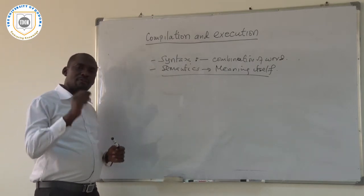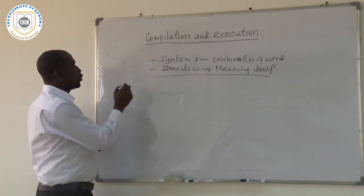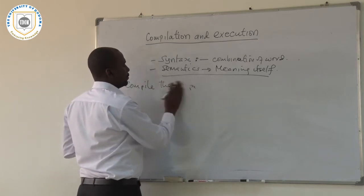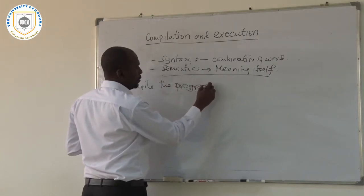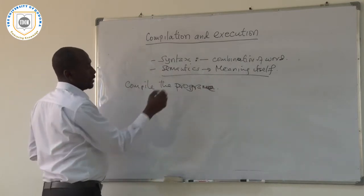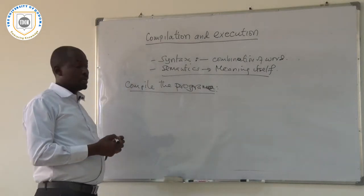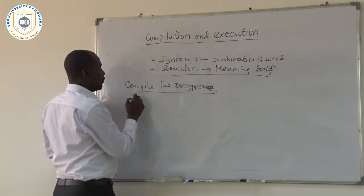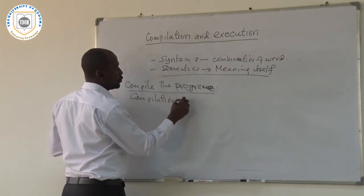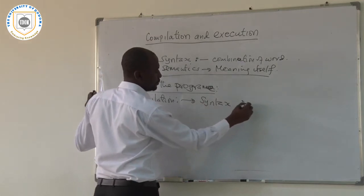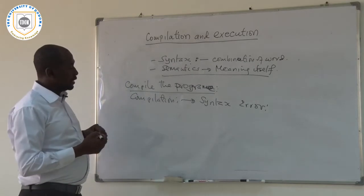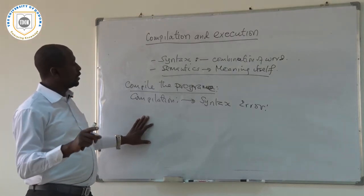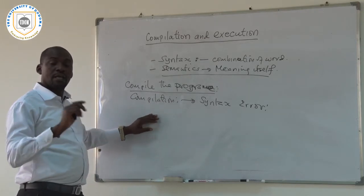When you write a program, the first thing you are supposed to do is to compile the program. The compilation is a process of compiling the program, and the aim of compilation is to check for any syntax error. So when you compile a program and there is a syntax error, the compiler will return those errors showing you that this program has an error in a specific line of code.